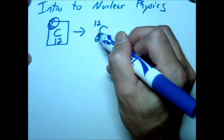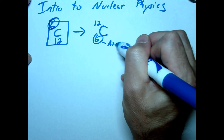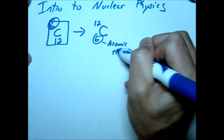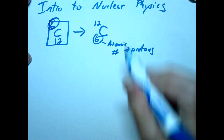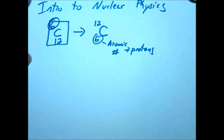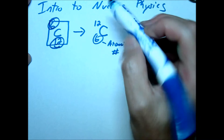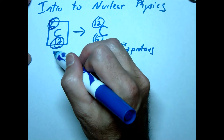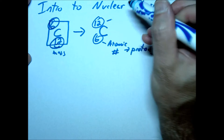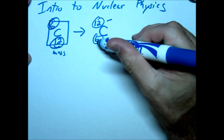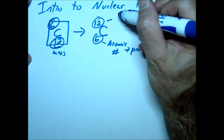Remember, this is what we call the atomic number, and the atomic number is simply the number of protons in our atom. This would be our atomic mass. Now if you remember, the atomic mass is simply going to be the sum of the protons and the neutrons.